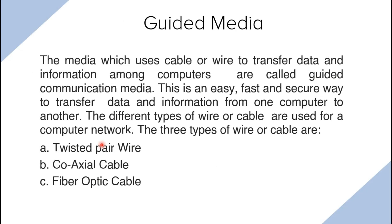Guided communication media is the media which uses cable or wire to transfer data and information among computers. It is a very easy, fast, and secure way to transfer data. The different types of wire cable used for computer networks are twisted pair wire, coaxial cable, and fiber optic cable — the three main types we will cover.